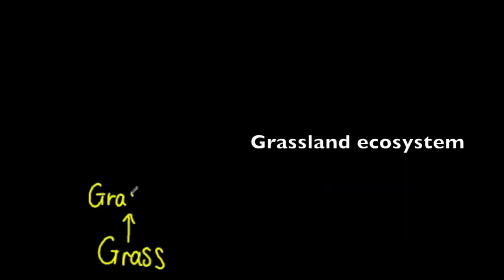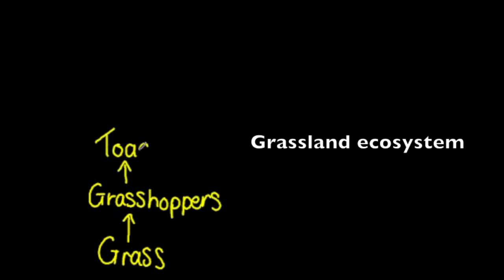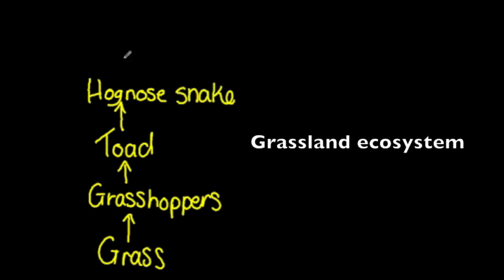The first of our food chain examples is for a grassland ecosystem. The grass is eaten by the grasshoppers, that are eaten by the toad, that's then eaten by the hognose snake, and the hognose snake is eaten by the hawk.